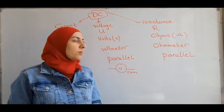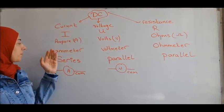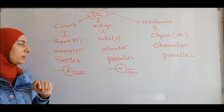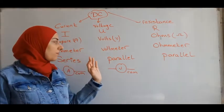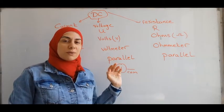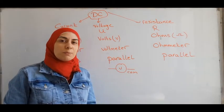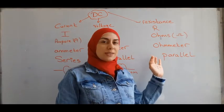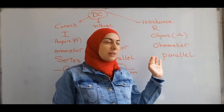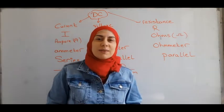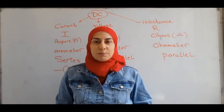We measure the current by using an ammeter connected in series. We measure the voltage by using a voltmeter connected in parallel, and we measure the resistance directly by using an ohmmeter connected in parallel.